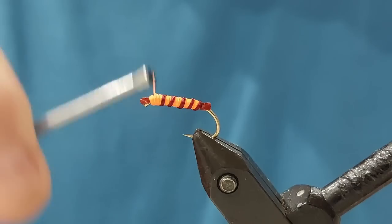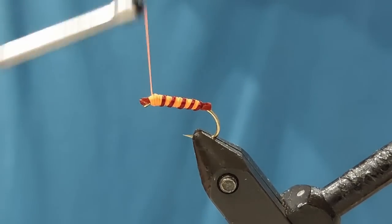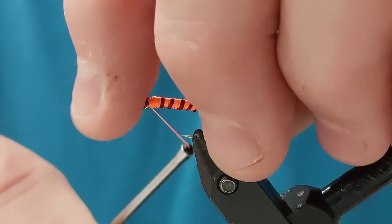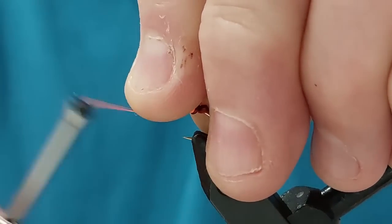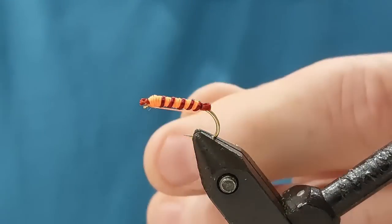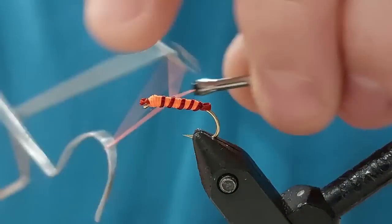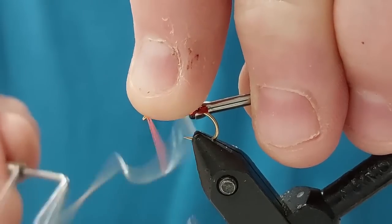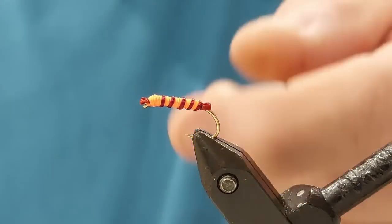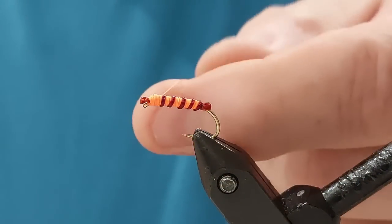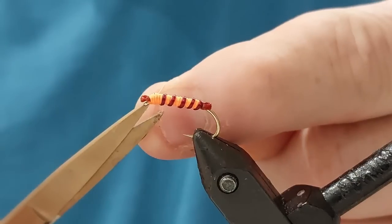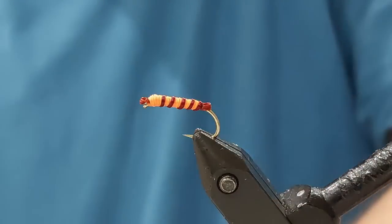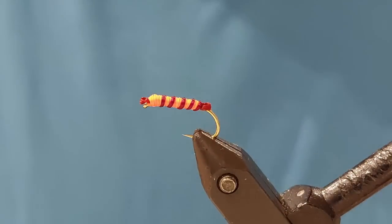And then basically just make your head, build the head. Pull this up round the front and then just finish it off with a couple of turns. Snip it off. So there's your body created now.